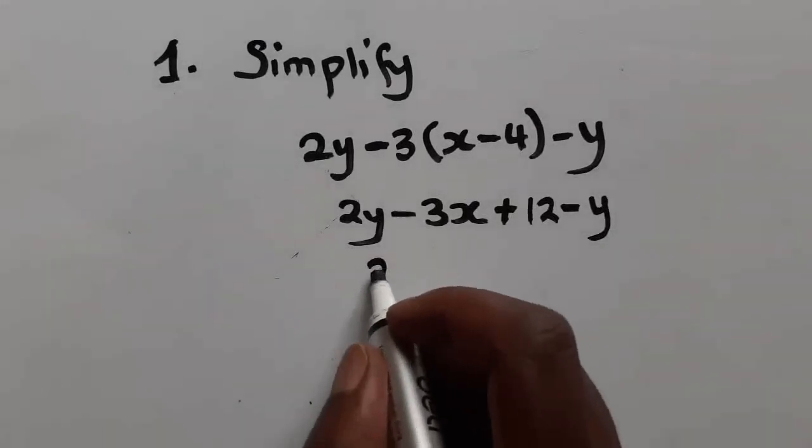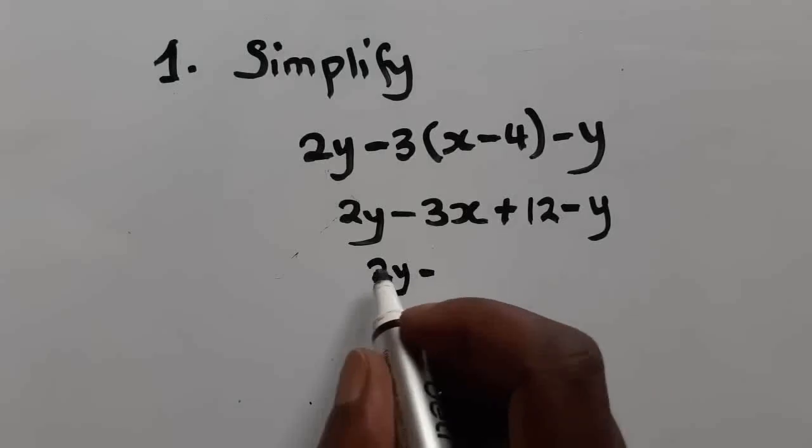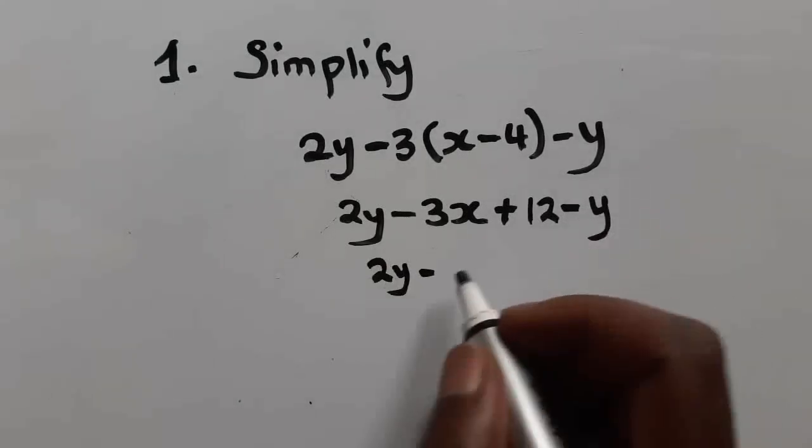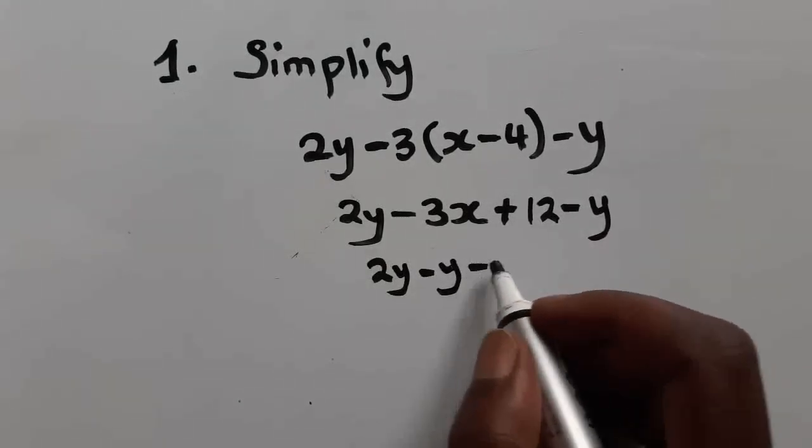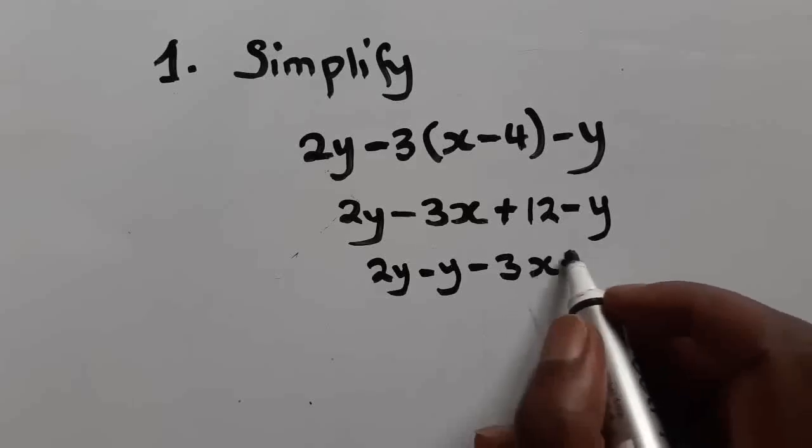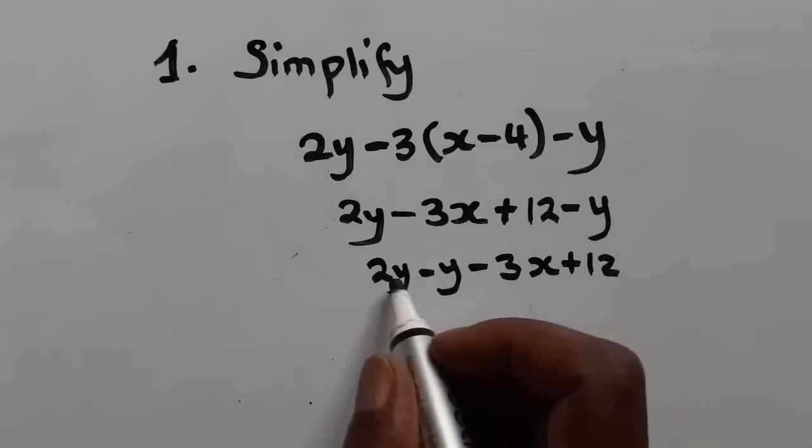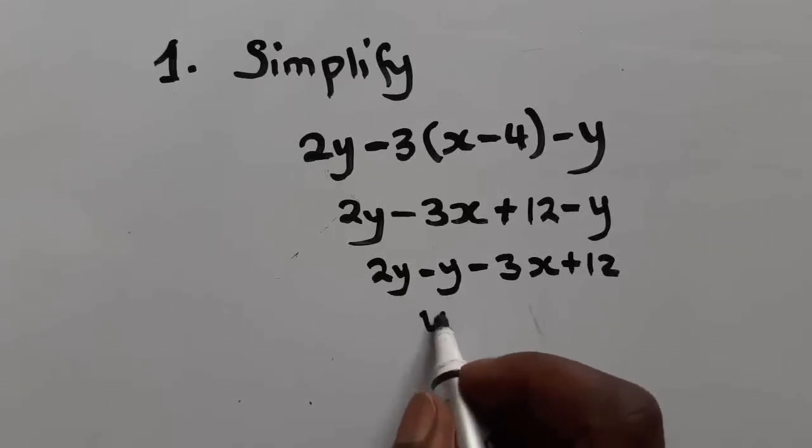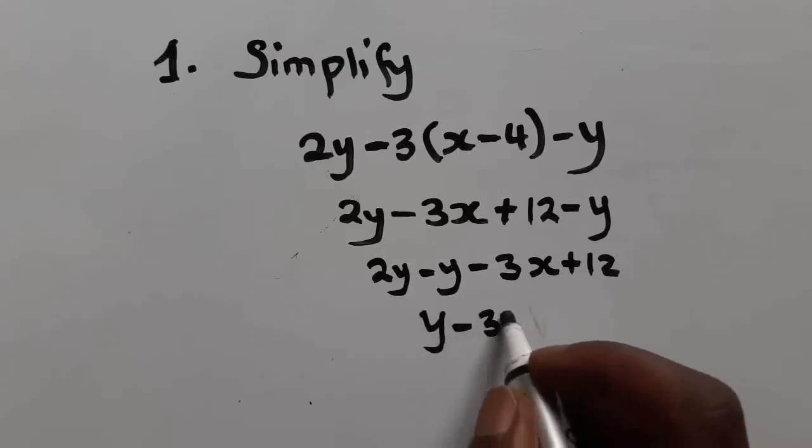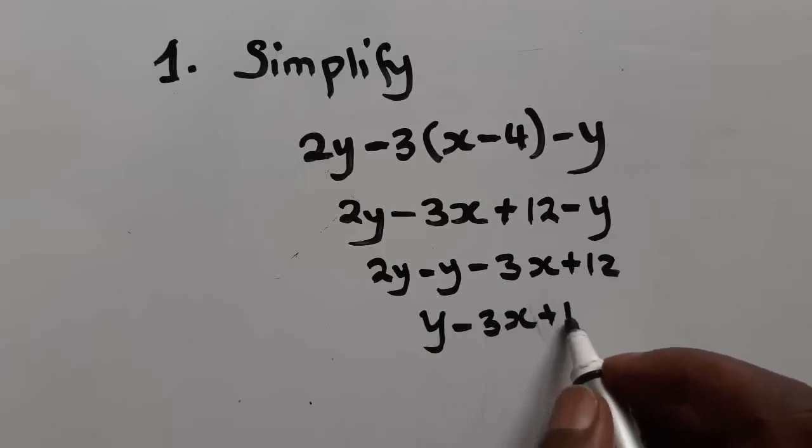At this point, we put the like terms together. 2y minus y minus 3x plus 12. So this here, 2y minus y, we're going to get y minus 3x plus 12.